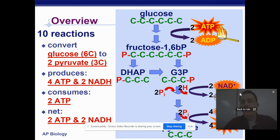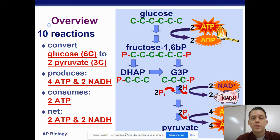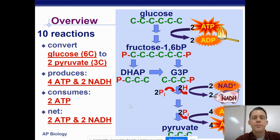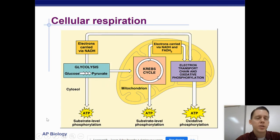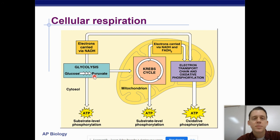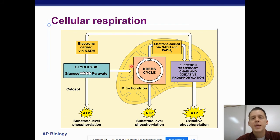Hi everybody. Today we are going to talk about the second part of aerobic respiration called the Krebs cycle. So far we've gone over glycolysis, and glycolysis gives us pyruvate, 2 ATP, and 2 NADH. We're going to find out what happens after that. Cell respiration begins with glycolysis, which gives us a little bit of ATP through substrate level phosphorylation, NADH, and pyruvate. The pyruvate is going to move into a mitochondria, where the next part of respiration begins — the Krebs cycle.